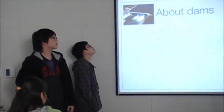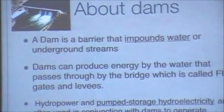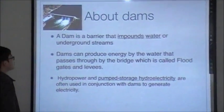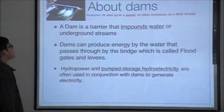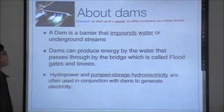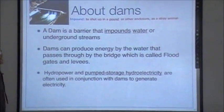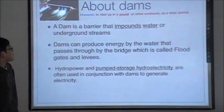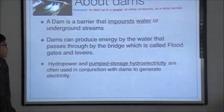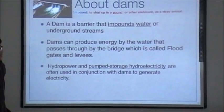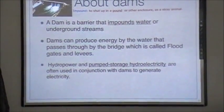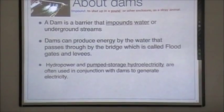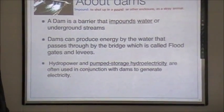Thank you. Now, Assistant Hawk, please. If you like this? Yes. What dams? The dam is a barrier that empowers water on the ground streams. A stray animal. That can produce energy by the water that passes through the bridge, which is called floodgates. Hydroelectricity are often used in conjunction with dams to generate electricity.